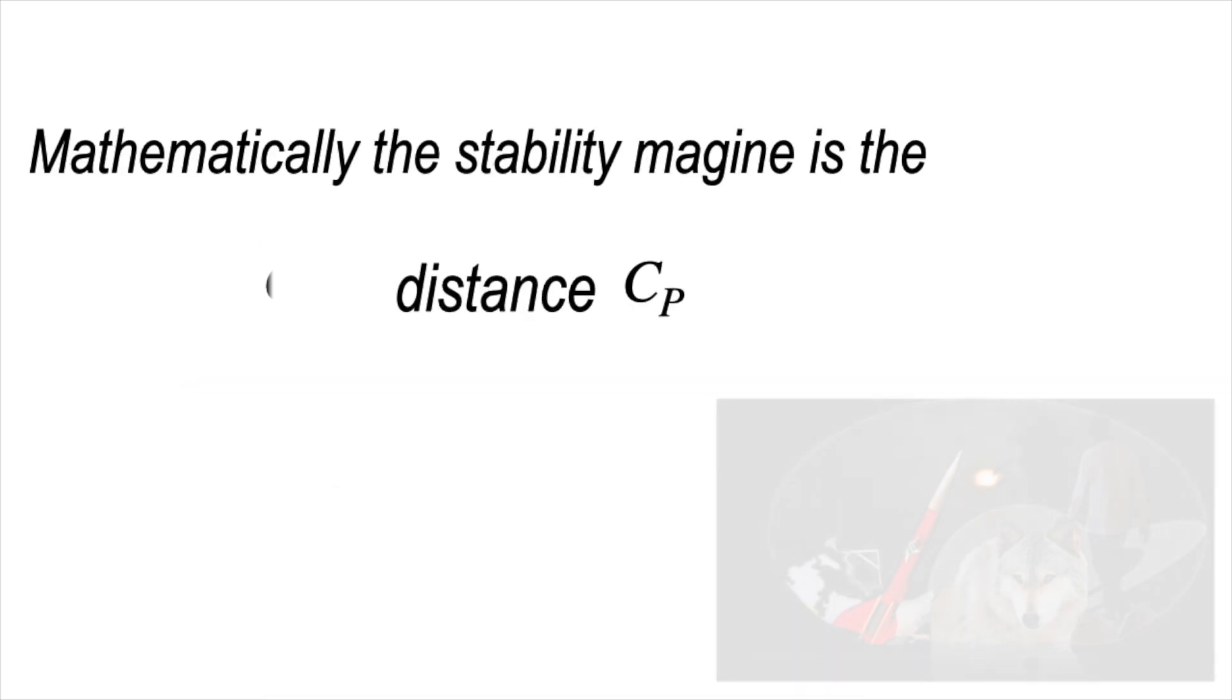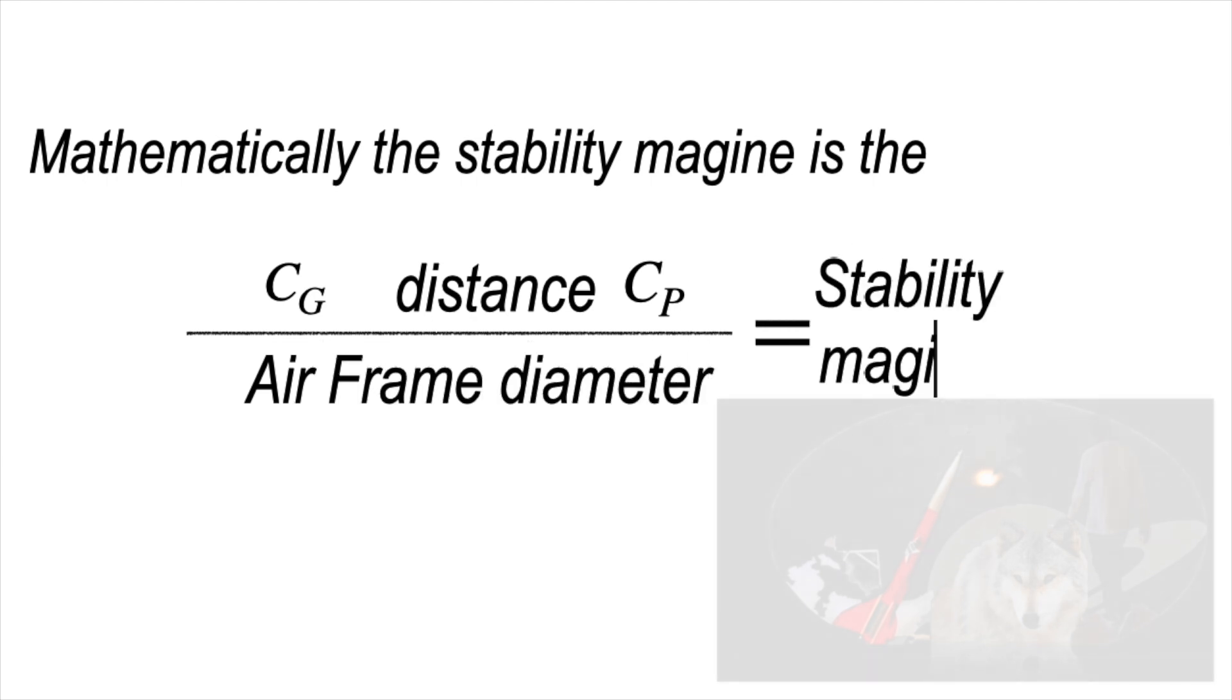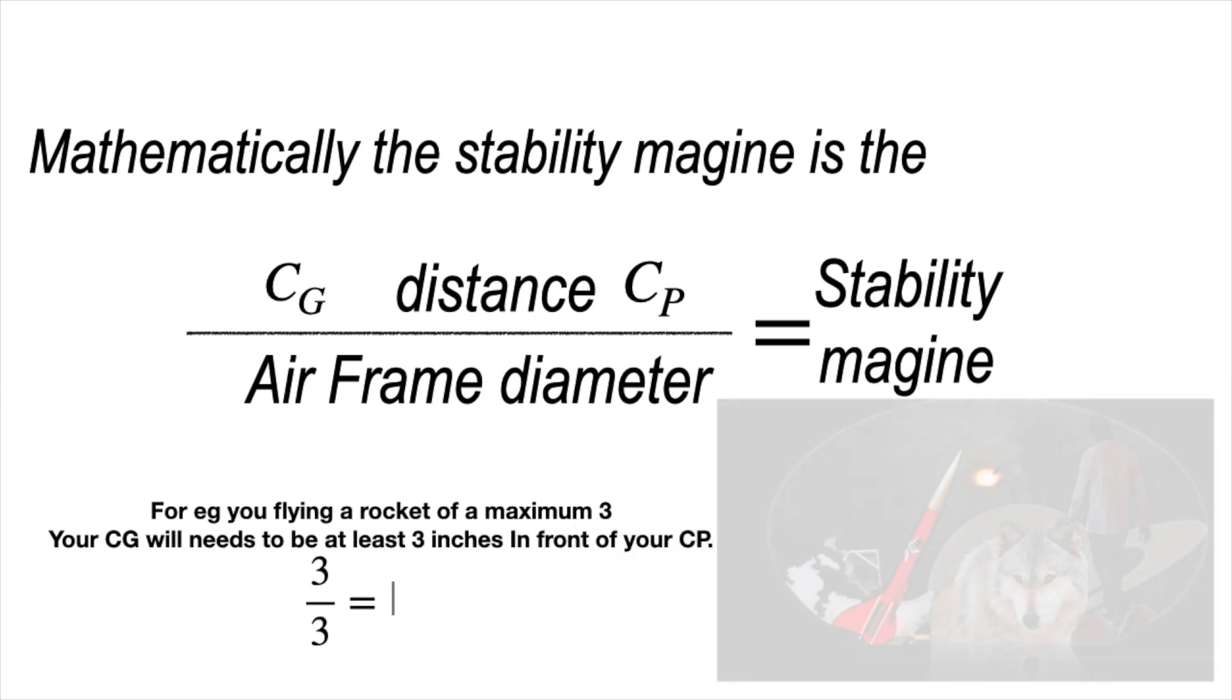The distance between CG and CP must be one body diameter for rocket stability to be accomplished. This is the stability margin. Mathematically, the stability margin is the distance between CG and CP divided by the airframe diameter. For example, if you are flying a rocket of a maximum diameter of 3 inches, your CG will need to be at least 3 inches in front of your CP, giving one caliber of stability or stability margin of 1.